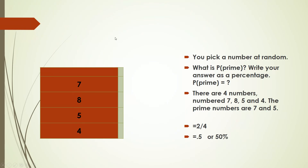Another example: suppose you have these random numbers — seven, eight, five, and four. You pick a number at random from these four numbers. The question is: what is the probability of picking a prime number? Write your answer as a percentage.